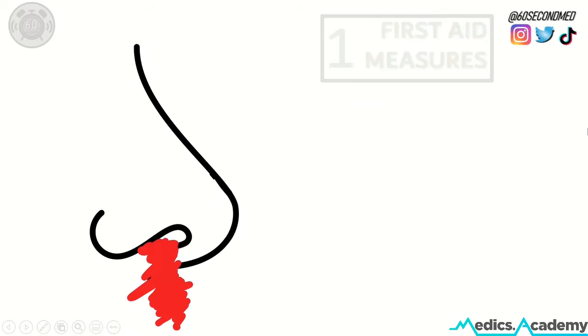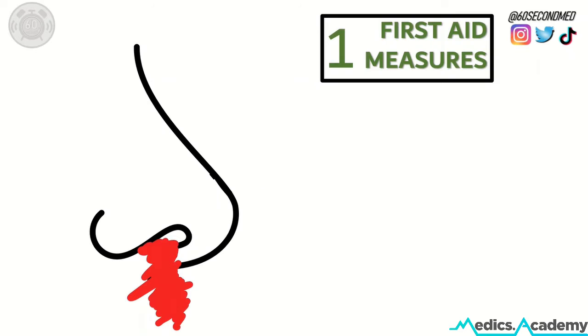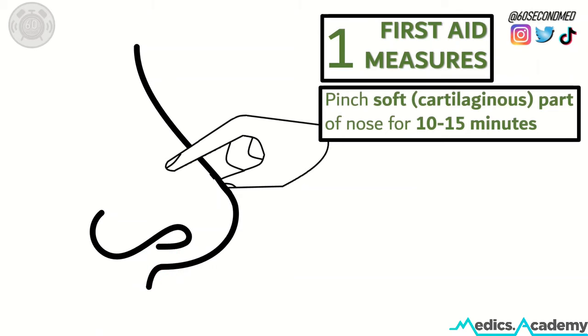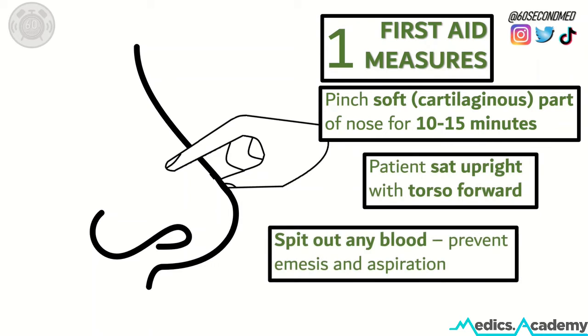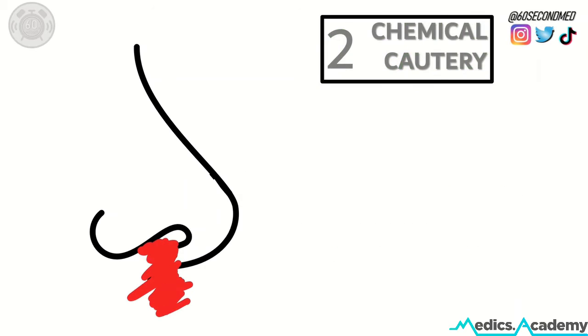The first step of management in an acute nosebleed is general first aid measures. Ask the patient to pinch the soft part of their nose for 10 to 15 minutes, position them correctly sat upright with their torso forward, and ask them to spit out any blood to prevent further vomiting or aspiration.